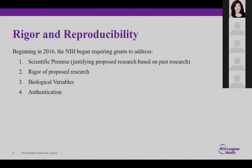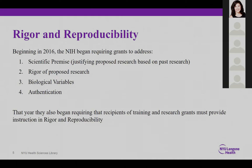Regarding rigor and reproducibility — I'm not sure how many of you are from the biomedical or life sciences arena, but this is language that the NIH uses. Starting in 2016, they issued new guidelines regarding what they call rigor and reproducibility, which consists of four elements: the scientific premise, basically justifying what you're doing based on what's been done before; the rigor of the proposed research; use of biological variables; and authentication. That year, they also began requiring that recipients of training and research grants must provide instruction to their students in rigor and reproducibility — and that's how we became involved.